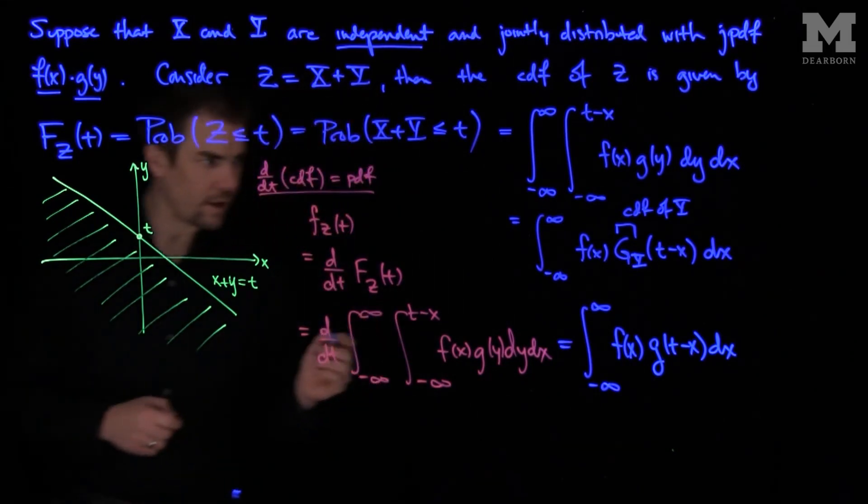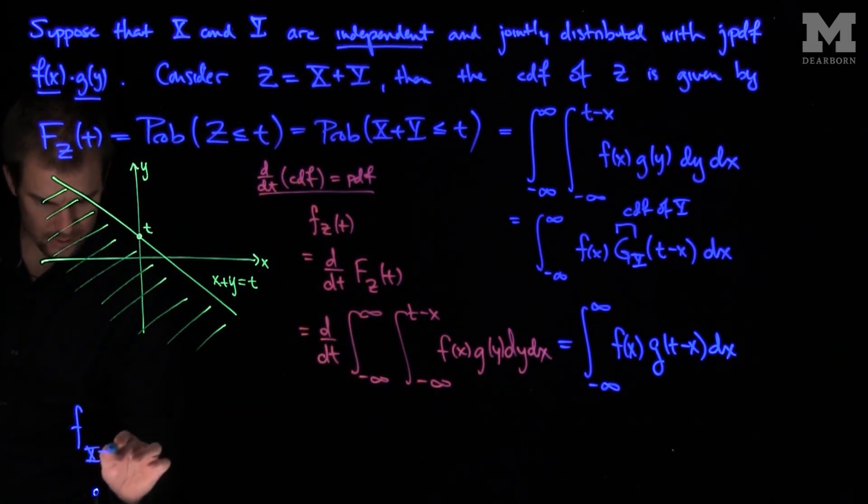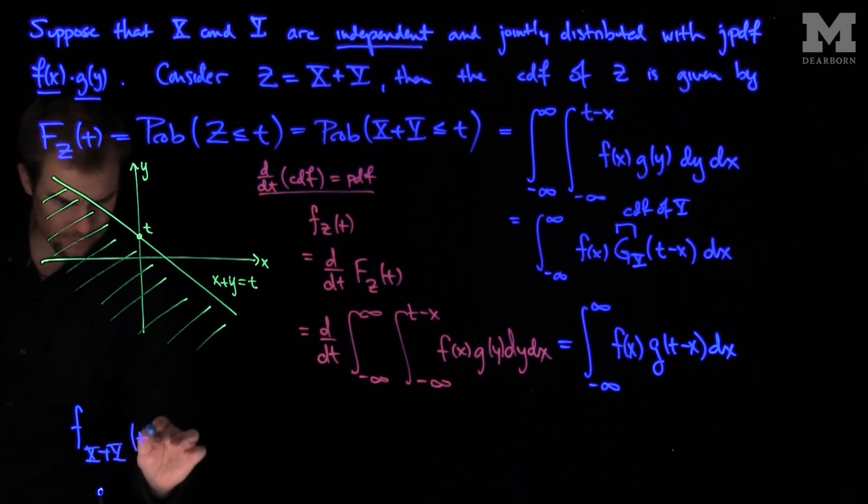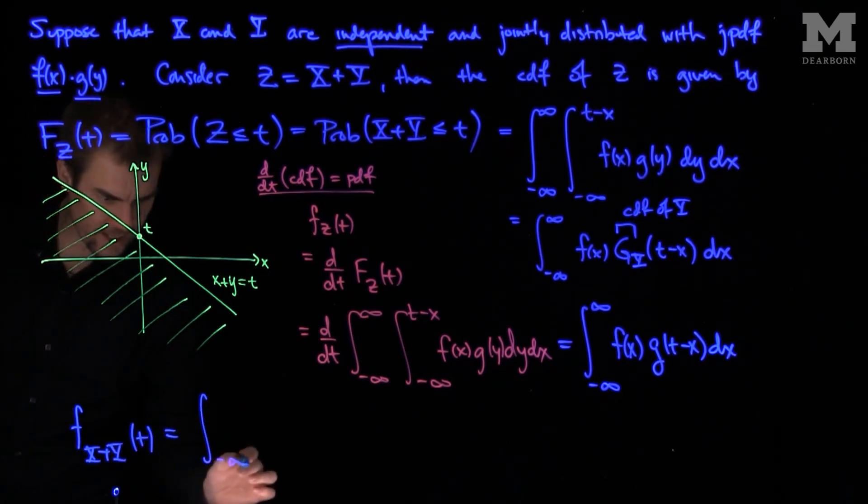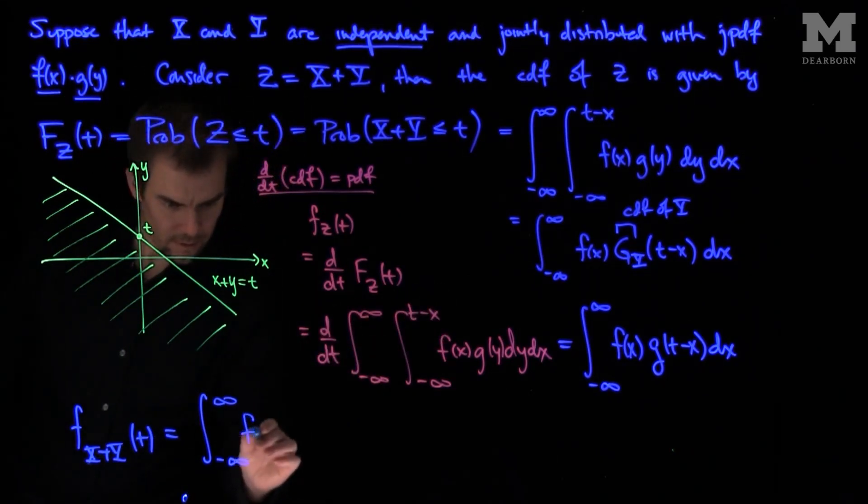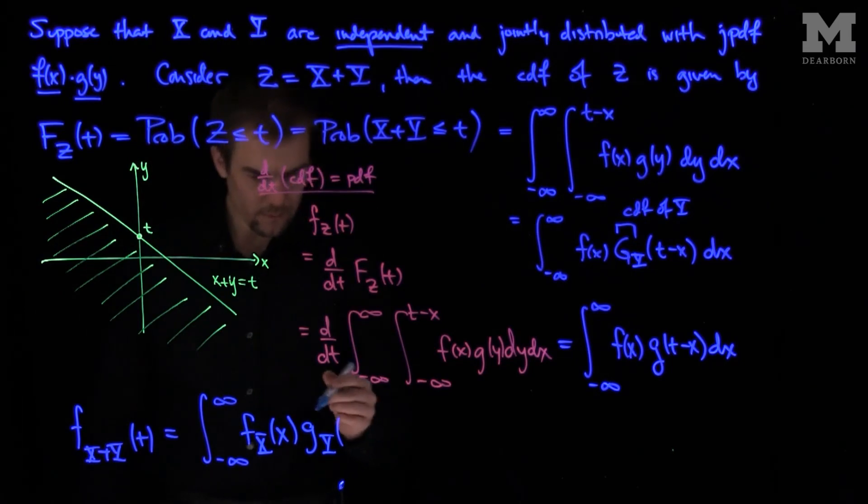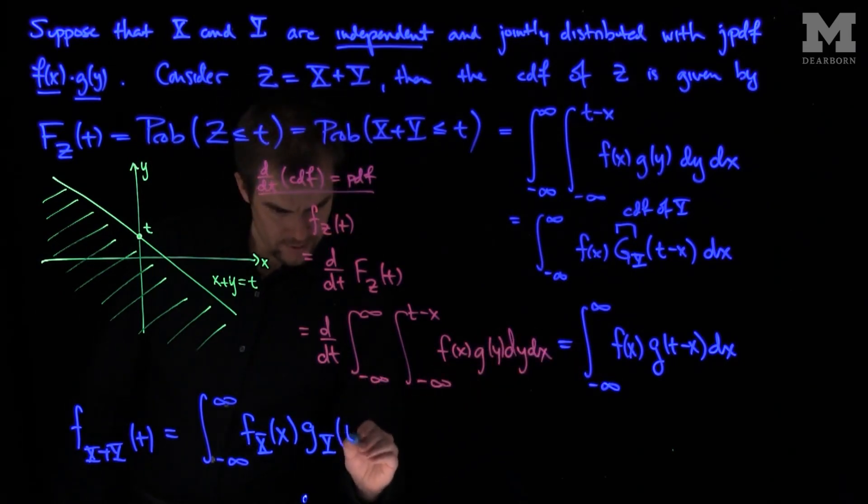And so this is our pdf. In other words, the pdf of the sum, f of X plus Y as a function of t, is the integral from negative infinity to infinity of the pdf of the X random variable, times the pdf of the Y random variable at the point t minus x, dx.